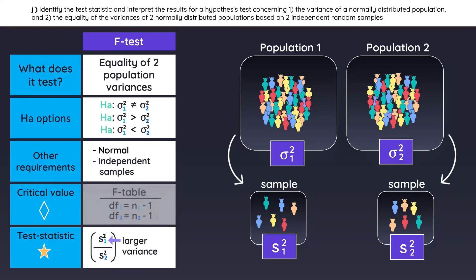The critical value is found in the F-table. The degrees of freedom needed to use the F-table are based on the size of each sample, and just like any other test, you would reject the null hypothesis if the test statistic falls within a rejection zone.